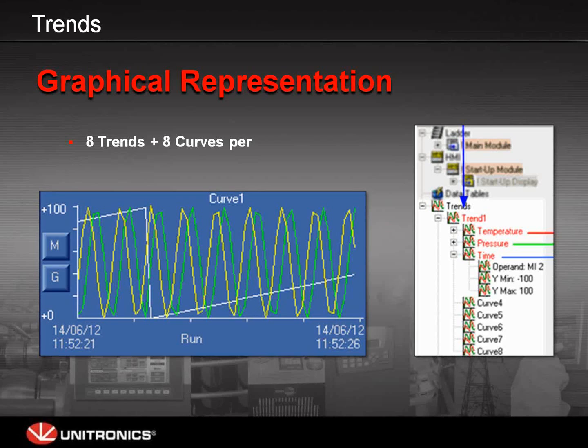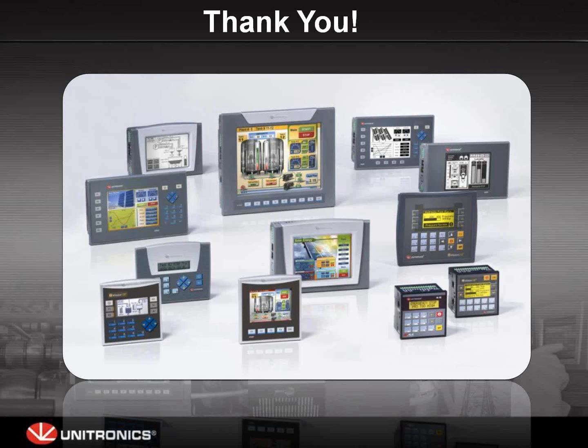We'll take a look at graphical representation of data. If you have the analog input coming in and it's been scaled, you want to show that on the HMI of the controller. We have the option for trends as well as meters and bar graphs. The trends allow you to have on a 570, 560, or 1040, a total of 8 trends with 8 curves per trend. You can have 8 different graphic variables with 8 curves on each line, giving you the ability to represent a total of 64 memory integer values linked to analog input values.